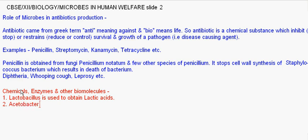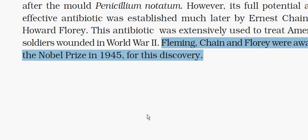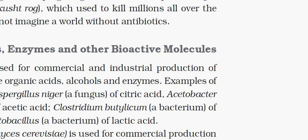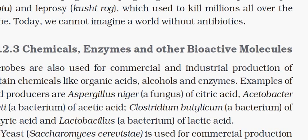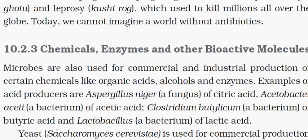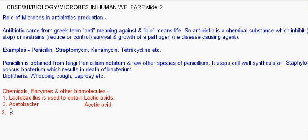Citric acid is produced from Aspergillus niger. Clostridium botulinum produces butyric acid. Aspergillus niger produces citric acid industrially, on a large scale. Clostridium butyricum is used for the industrial production of butyric acid.